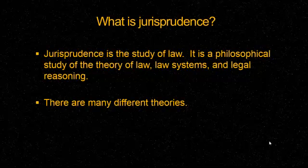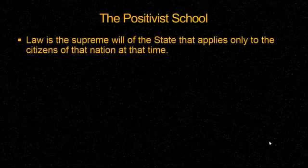Depending on their school of thought, lawyers, police officers, and others can have different views of not only what the law is, but how it should be applied. The positivist school states that law is the supreme will of the state and only applies to citizens of that nation at that time. From our point of view, the United States passes laws that are current and meet our definition of ethical and legal behavior — and they only apply in this time frame. As the country moves to a different point of view, you would see a shift in the laws.